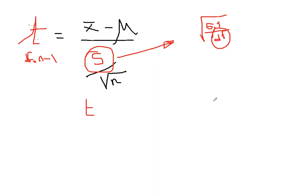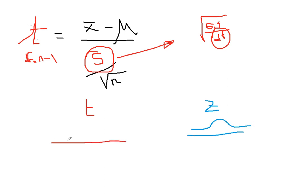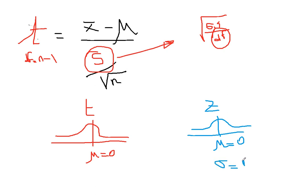Let me compare the t to the Z in different colors. If we consider Z to have a normal distribution, then t has a normal distribution as well — so far they're exactly the same. If Z has a mu of zero, then t also has a mu of zero. Here's the difference: sigma of Z equals 1, whereas sigma of t is not equal to 1 — it's actually greater than 1.